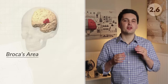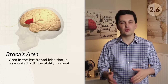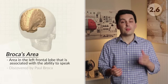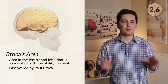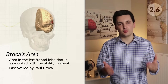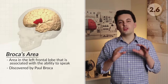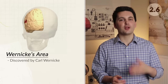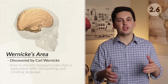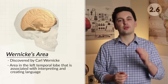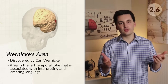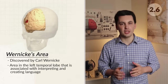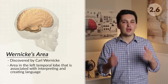Starting with Broca's area — this area of the brain is in charge of facial muscles used to help us speak, first identified by Paul Broca. If this area of the brain is ever damaged, an individual will experience Broca's aphasia, which is the loss of ability to produce language. Next is Wernicke's area, discovered by Carl Wernicke, which is responsible for creating meaningful speech. If this part of the brain is ever damaged, a person will lose the ability to create meaningful speech — this is known as Wernicke's aphasia.